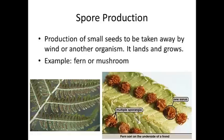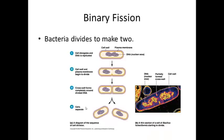Binary fission is how bacterial cells divide. It's very simple: the DNA is split in half and the offspring are identical to the parent. The bacterial cell has a nucleoid region, plasma membrane, ribosomes, and cytoplasm. The DNA begins to split, a cross wall forms, and the cell separates, resulting in two new bacterial cells.